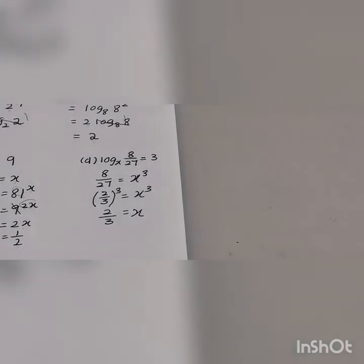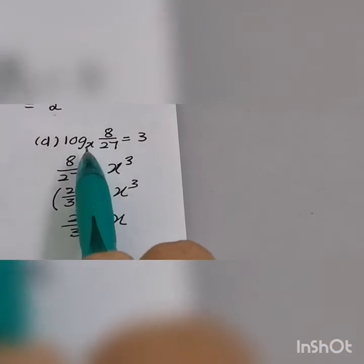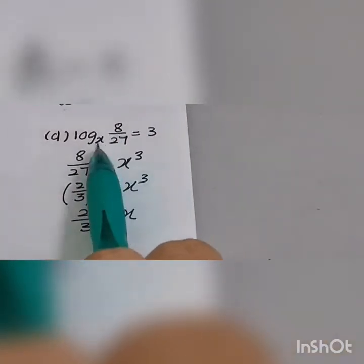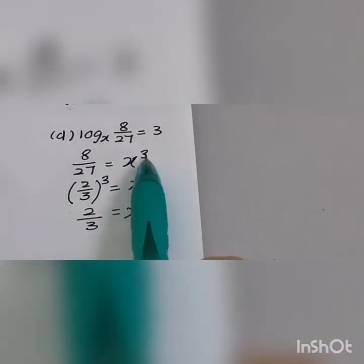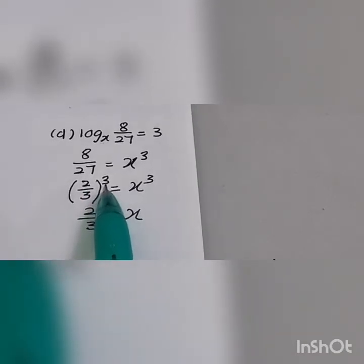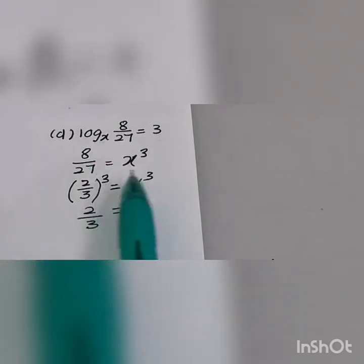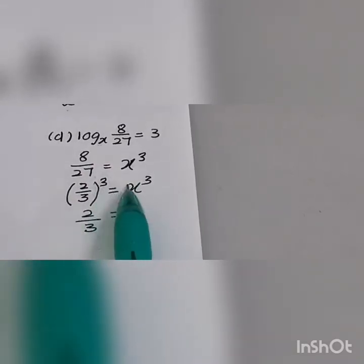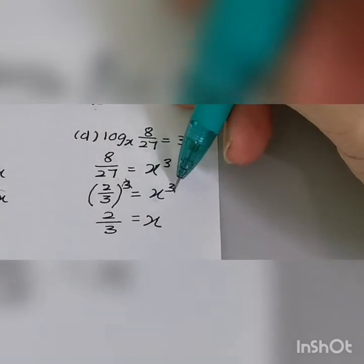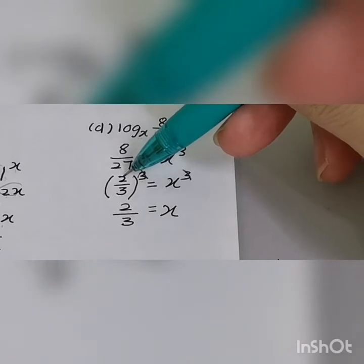How about this one: log base x of x — move to the right-hand side, x becomes the base, 3 becomes the power. Now 2 over 3 to the power 3, or cubed, becomes 8 over 27. Make sure the powers on both sides match, then the powers cancel out. So the final answer is x equals 2 over 3.